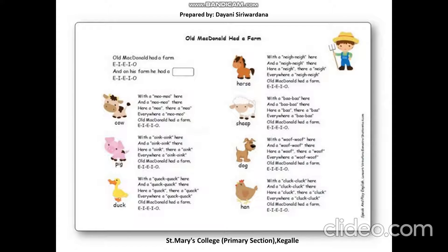Old MacDonald had a farm. Old MacDonald had a farm. E-I-E-I-O. And on his farm he had a cow. E-I-E-I-O. With a moo-moo here and a moo-moo there. Here a moo, there a moo, and everywhere a moo-moo. Old MacDonald had a farm. E-I-E-I-O.